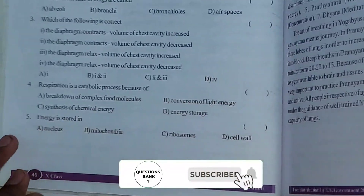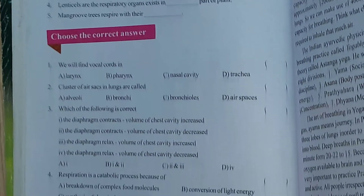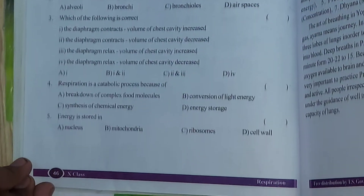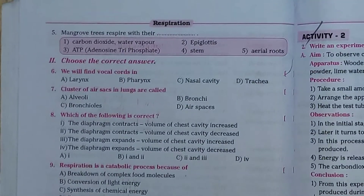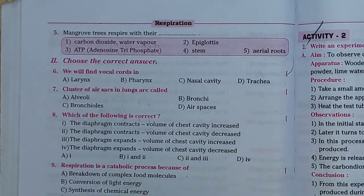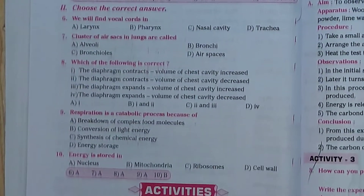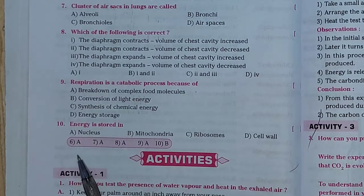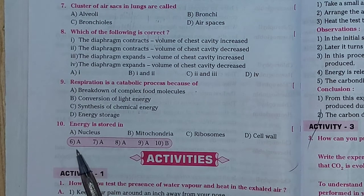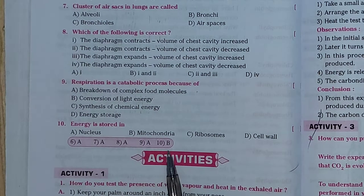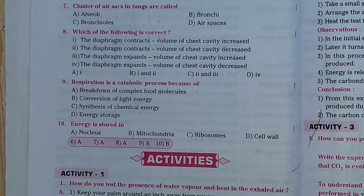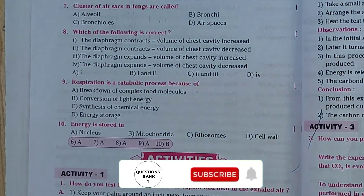Let's move to the choose the correct answer section. First we'll see the questions in the test book, then the answers in Question Bank. You can see the questions — there are a total of 10 questions. The answers are: question 6 answer is A, question 7 is A, question 8 is A, question 9 is A, and question 10 is B.